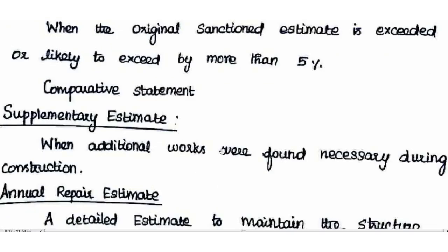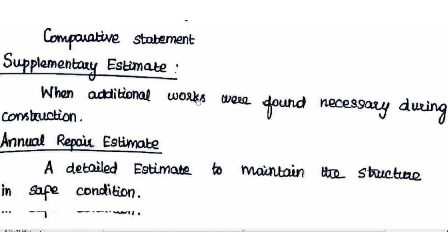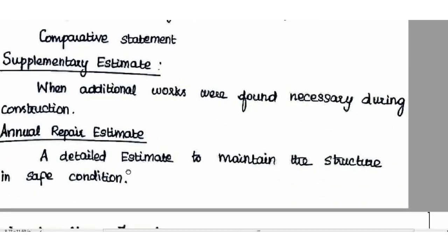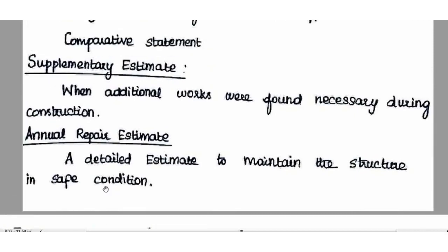Supplementary Estimate is prepared when additional works are found necessary during construction. Annual Repair Estimate is a detailed estimate prepared to maintain the structure in safe condition. Detailed estimate to maintain the structure in safe condition is known as Annual Repair Estimate.